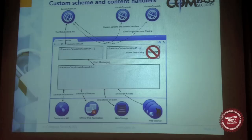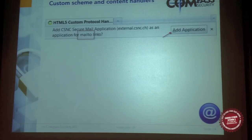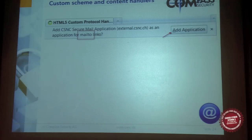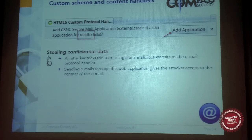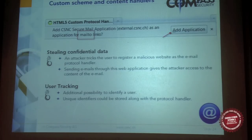The custom scheme and content handler is the possibility to register an application as a protocol handler, like mailto for example. If the user clicks 'add application' — which they usually do — it's possible to steal confidential data, because when the attacker clicks on a mailto link it is redirected to the attacker's page, where the user enters their email and the attacker can steal that information. It's also another possibility for user tracking — you can store unique identifiers along with the content handler.